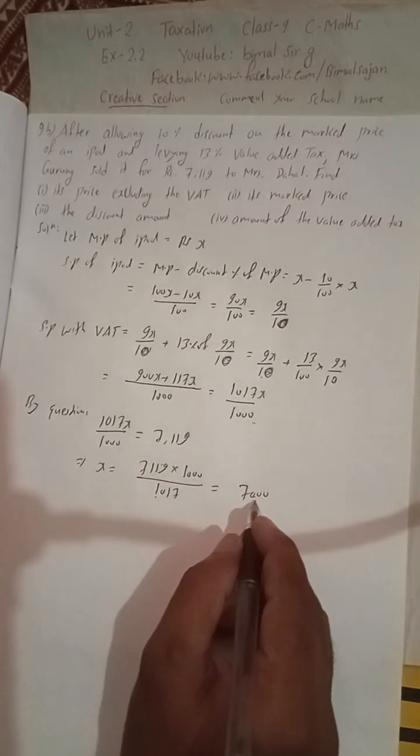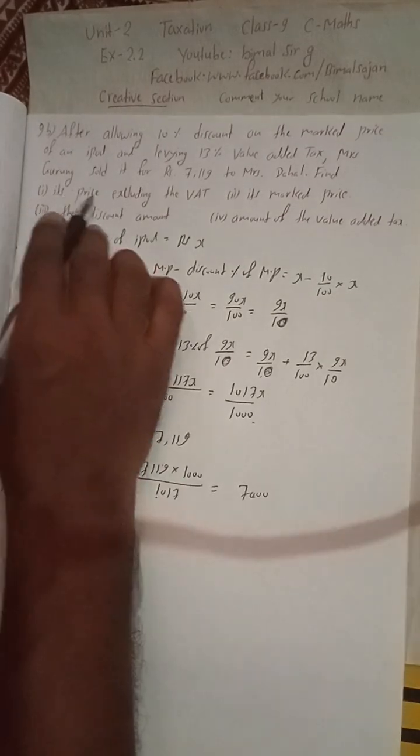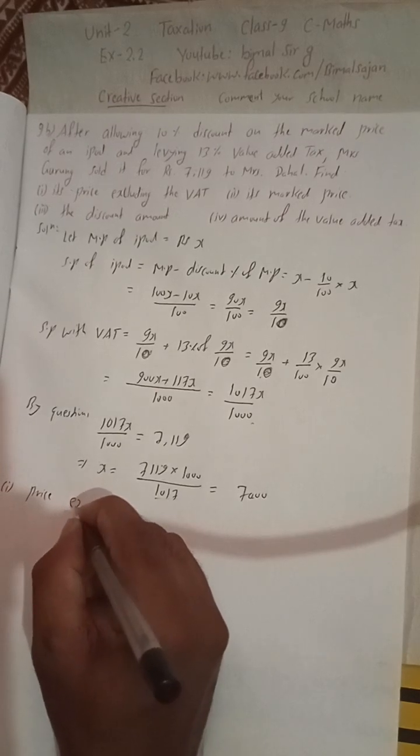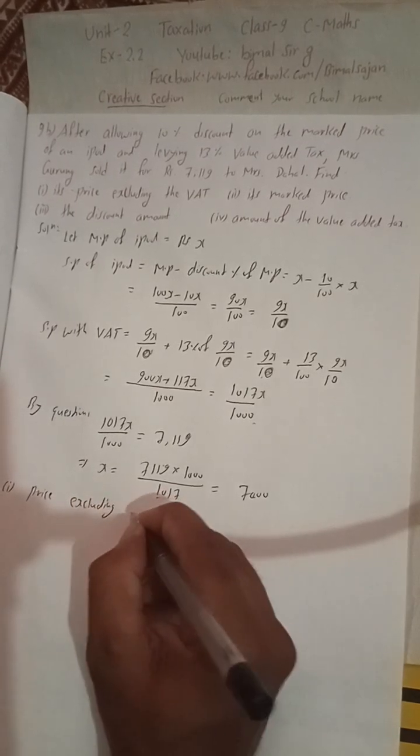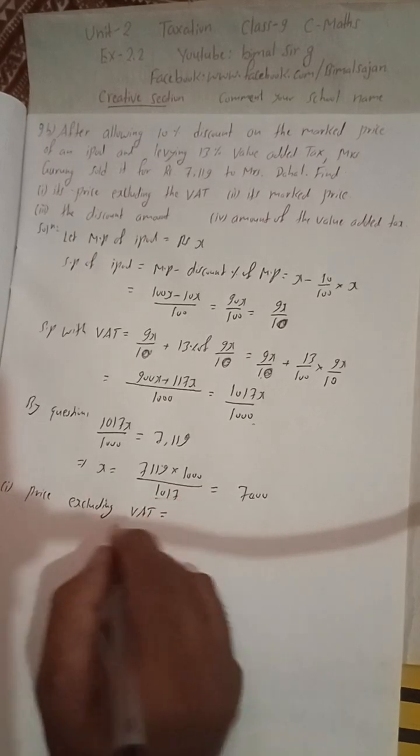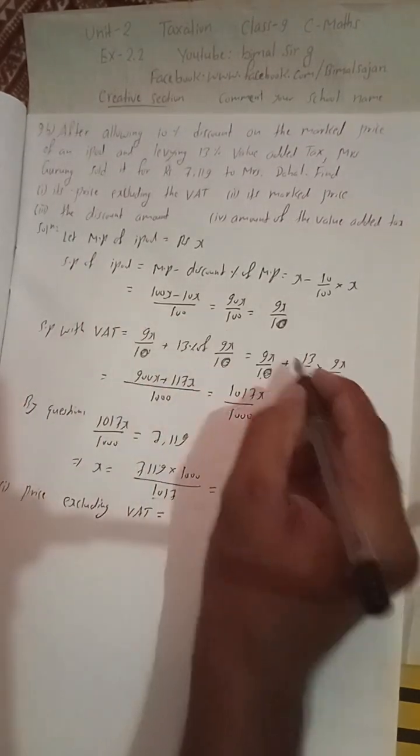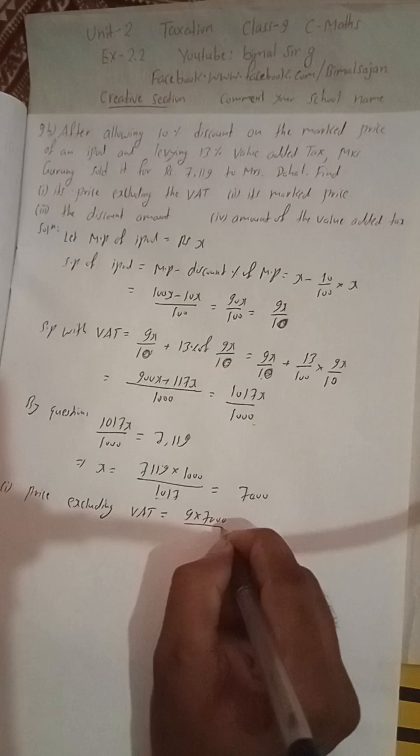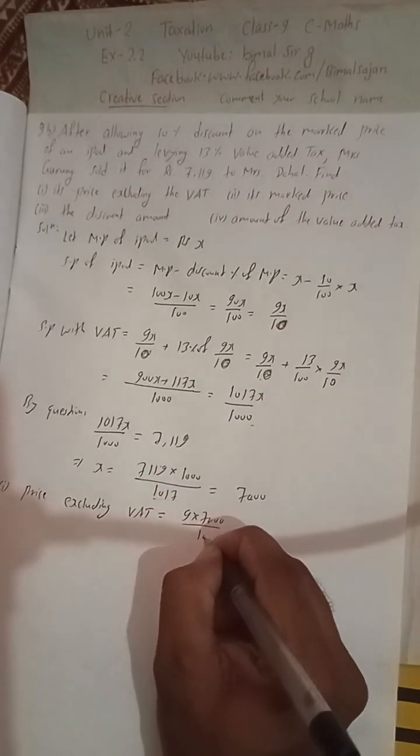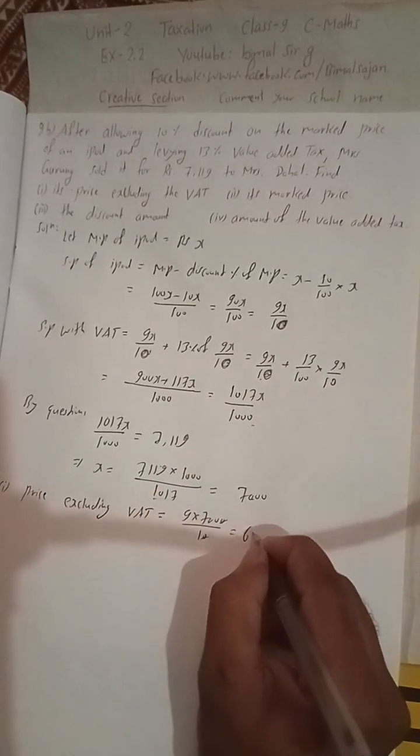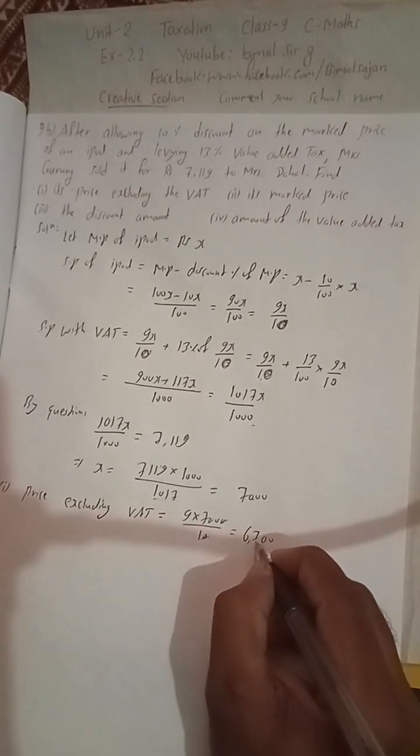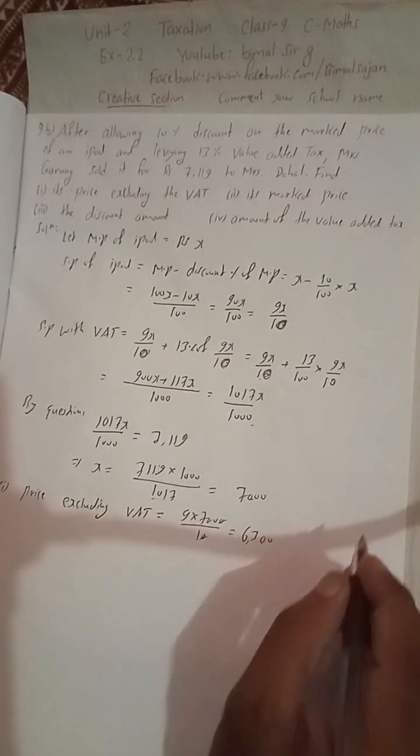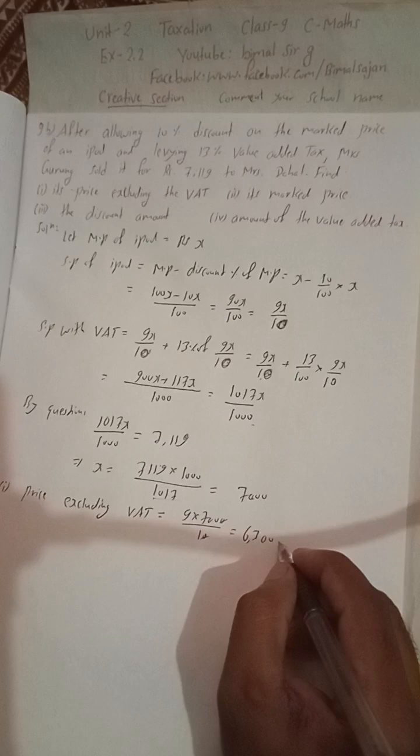This is the marked price we got. In the question, first is price excluding VAT. Price excluding VAT means without VAT, which is 9x by 10. So 9 times 7000 by 10, when you cancel, is 6300. The price is Rs. 6300.